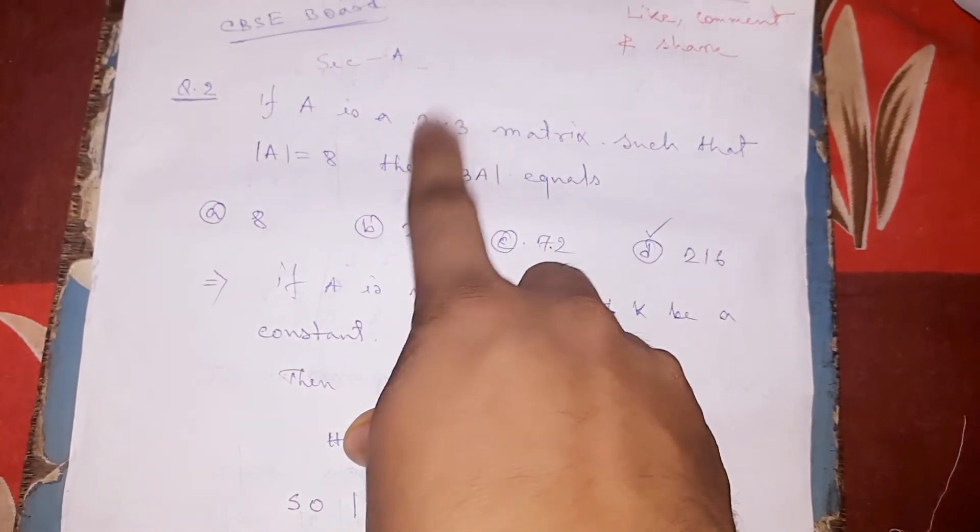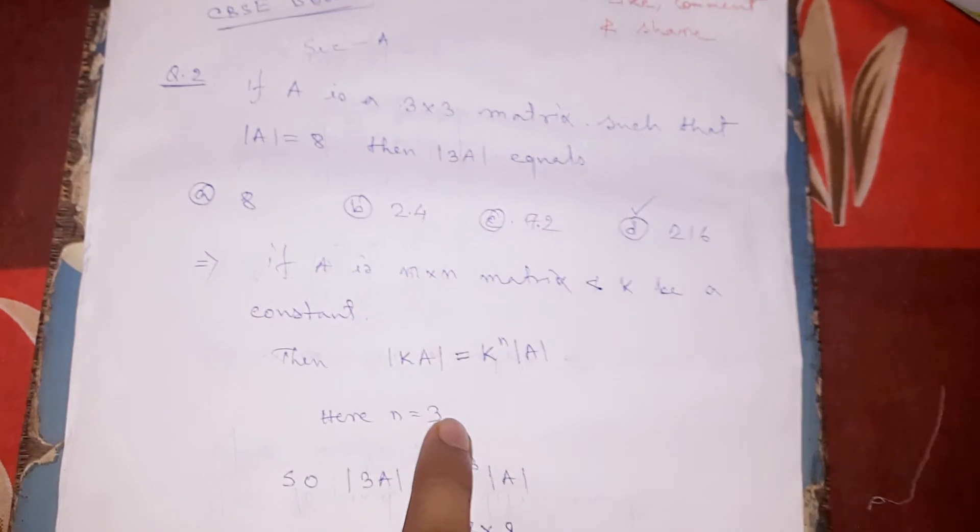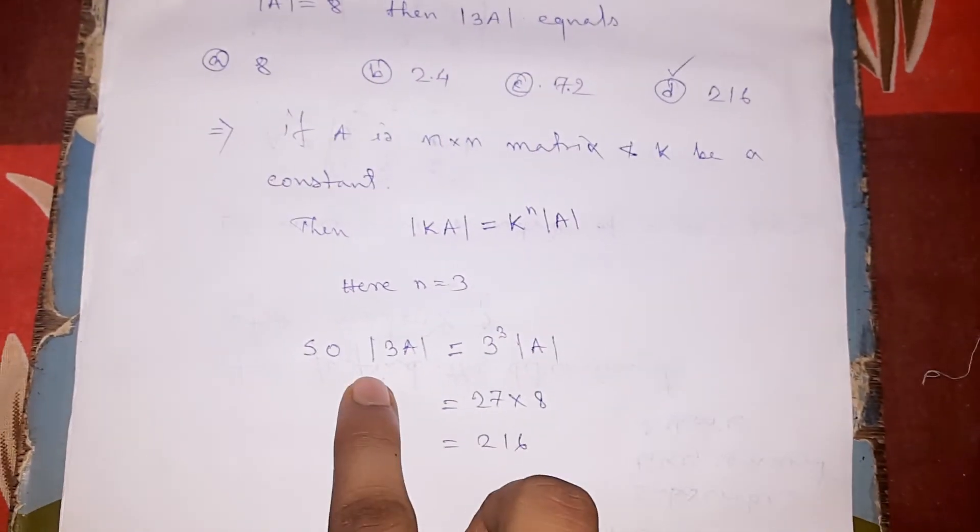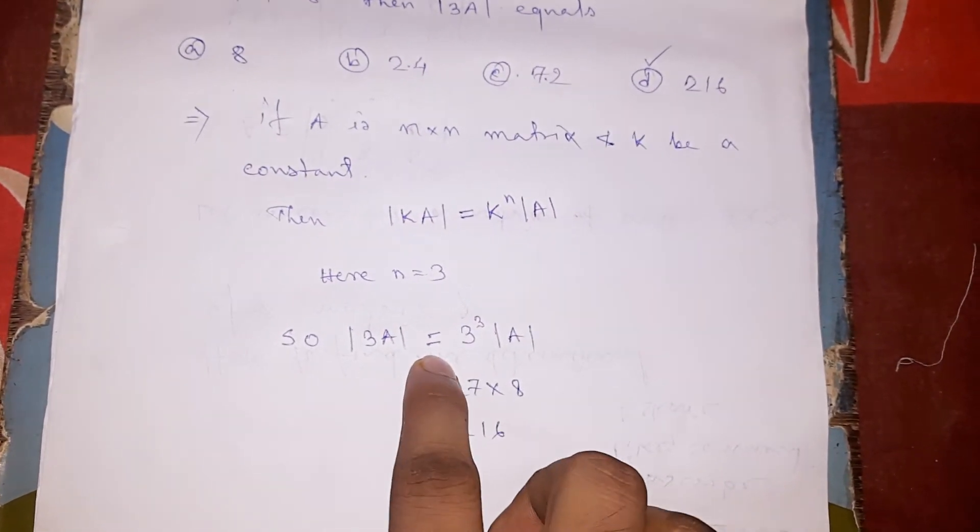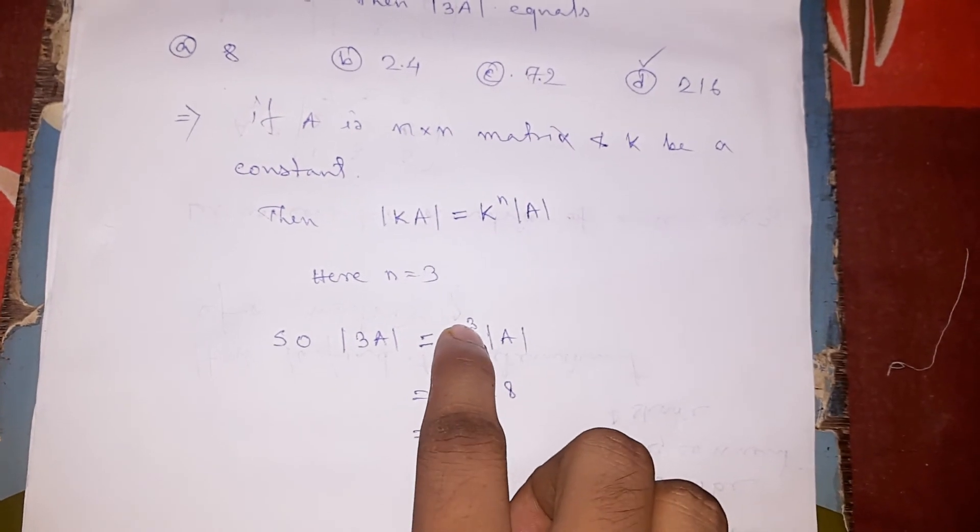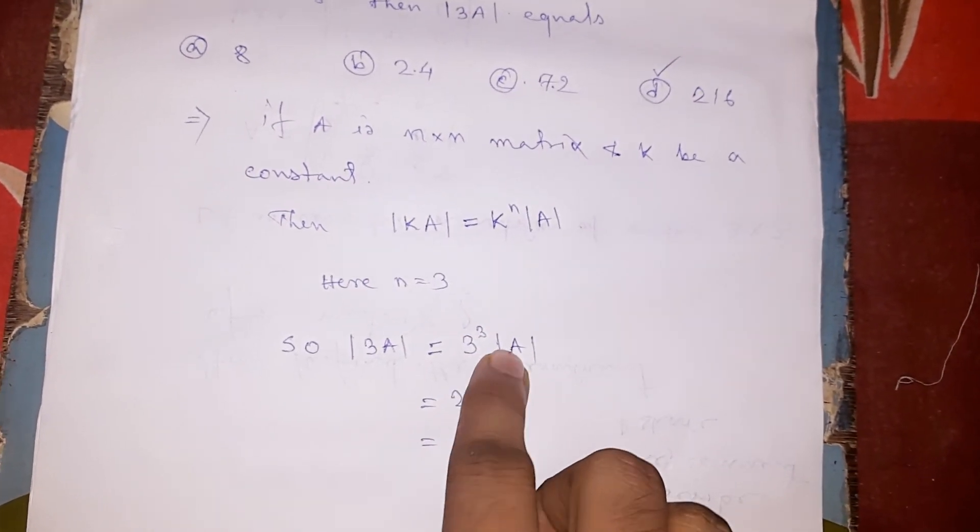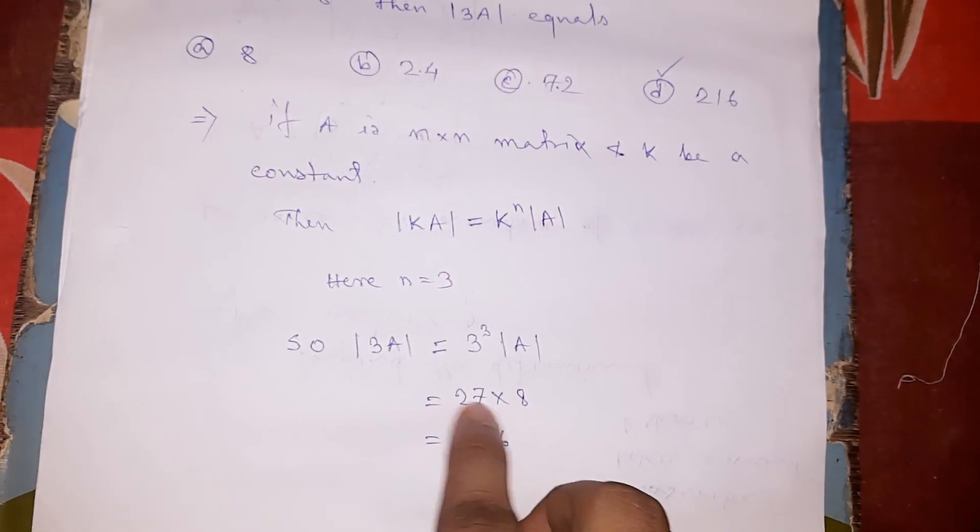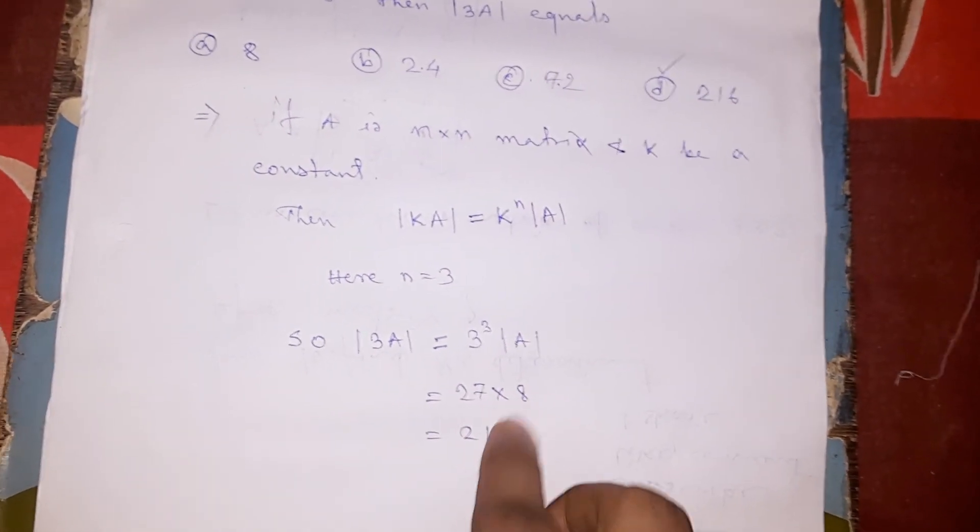So n equals 3. Therefore determinant of 3A equals 3 to the power 3, or 3 cubed, times determinant of A. That's 27 times 8, which equals 216.